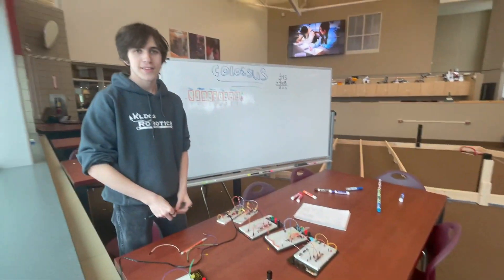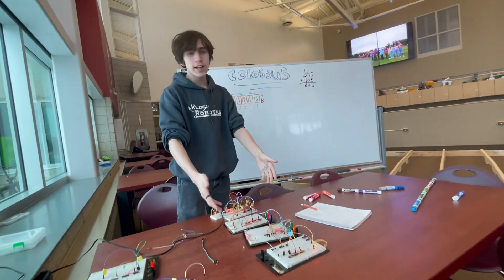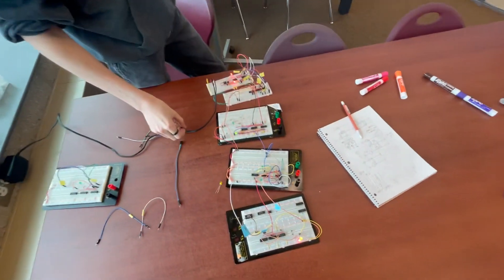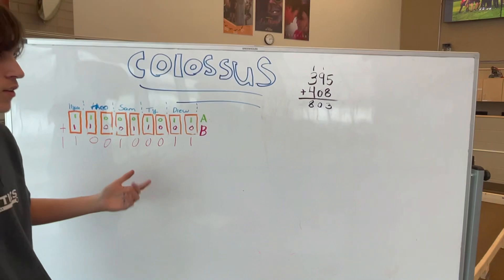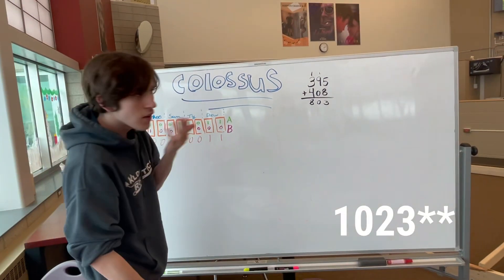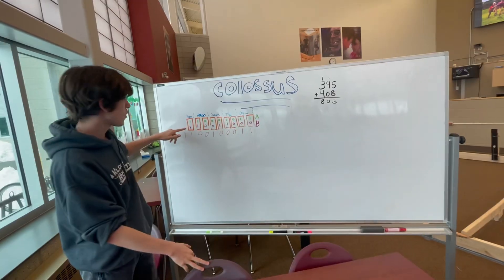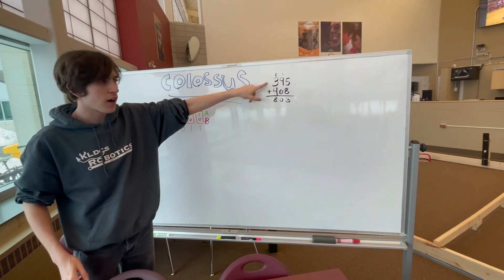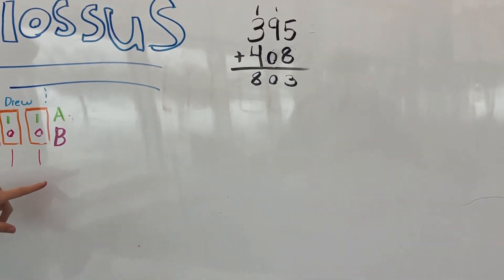Here we have a calculator, a big one and a simple one, that can add up to 1027. We have two seven-bit binary numbers, specifically 395 and 408, which adds to the 8-bit number 803.